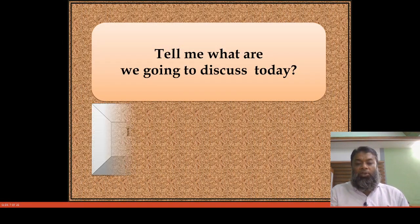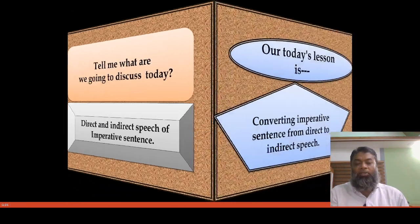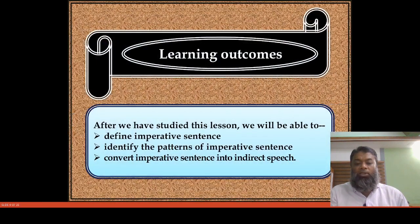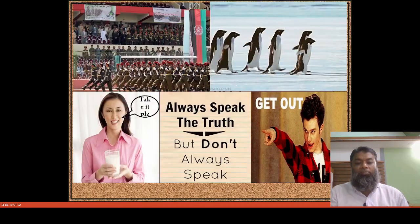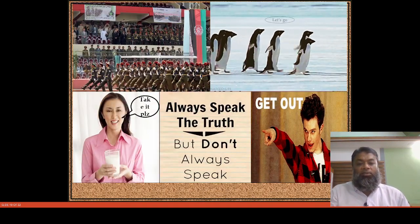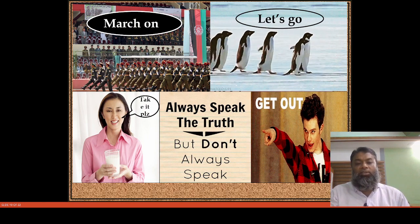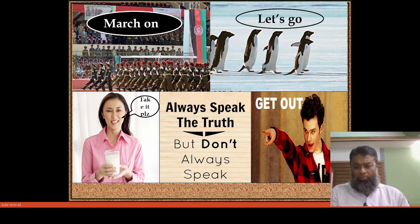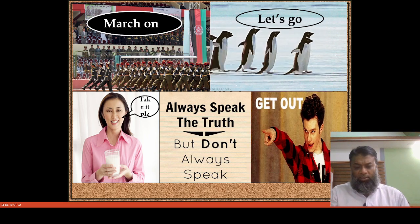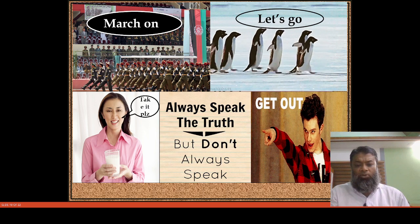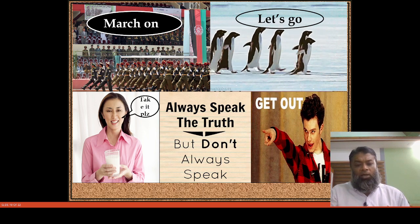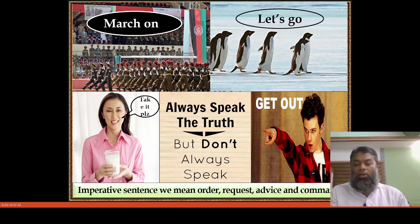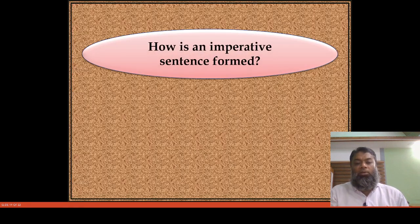So the topic today is: indirect and direct speech of imperative sentences. An imperative sentence can express order, request, advice, or command. For example: 'March on' — the commander is commanding; 'Let's go' — the penguin proposed; 'Get out'; 'Always speak the truth' — a universal truth; and the girl is requesting someone to take the glass of milk.